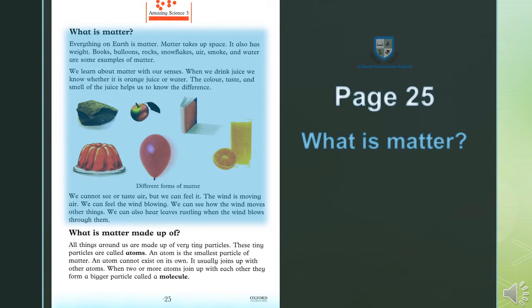We cannot see or taste air. Hum hawa ko na dekh saktay hain, nahi chakh saktay hain. But we can feel it — lekin hum use mehsus kar saktay hain. The wind is moving air. Wind, yani chalti hoi hawa hoti hai. Yeh teiz hawa wind kehlati hai. We can feel the wind blowing — hum hawa ko chalti hoi mehsus kar saktay hain. We can see how the wind moves other things — ke kis tarah se hawa dusri chizo ko hilati hai. We can also hear leaves rustling — patto ki sarsar — when the wind blows through them, jab unmein se hawa guzarti hai.